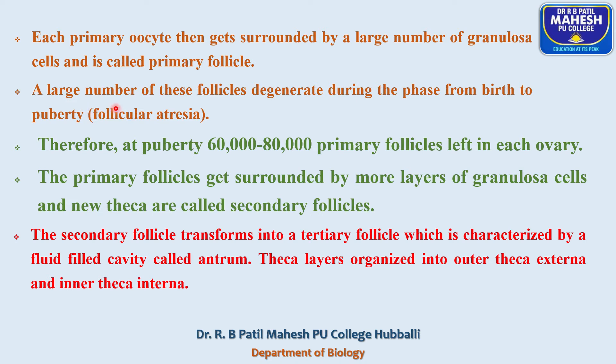A large number of primary follicles get degenerated from birth to puberty by the process called follicular atresia. Therefore, at puberty, around 60,000 to 80,000 primary follicles are left in each ovary. That means both ovaries consist of approximately 160,000 primary follicles.